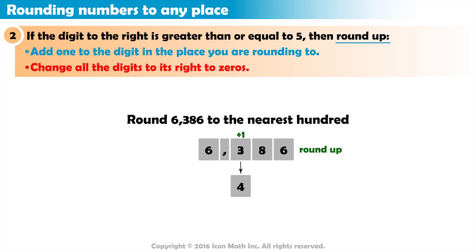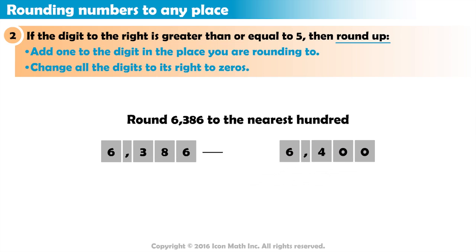All digits to its right become zeros. 8 becomes 0, and 6 becomes 0. So, the number becomes, after rounding, 6,400.